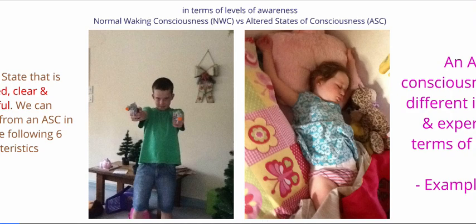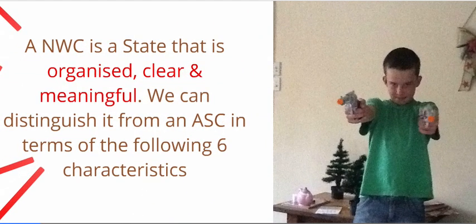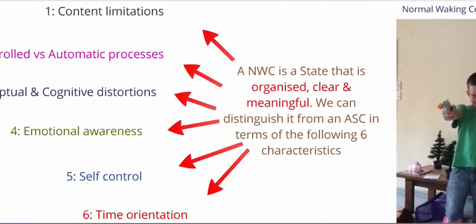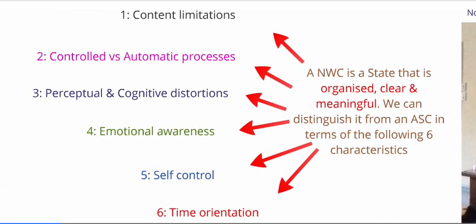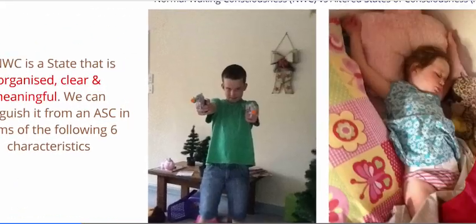Let's look at the difference between normal waking and altered states of consciousness in terms of the levels of awareness. We need to start by defining these two concepts. A normal waking consciousness is a state in which our thoughts, feelings, and perceptions are clear, organized, and meaningful. We can distinguish a normal waking consciousness from an altered state based on six psychological characteristics, and we'll go into depth with these shortly.